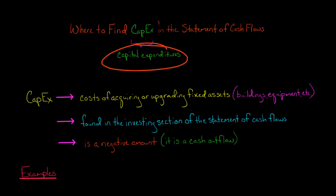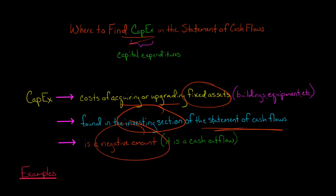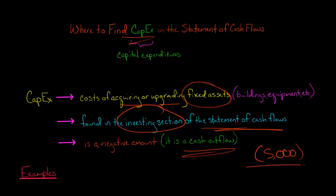Capital expenditures, or CapEx for short, represent the cost of acquiring or upgrading a company's fixed assets. You'd find a company's CapEx in the investing section of the company's statement of cash flows. The CapEx is going to be a negative amount — it's a cash outflow, so you'd see something like $5,000 in parentheses, meaning there was a cash outflow of $5,000 for capital expenditures.